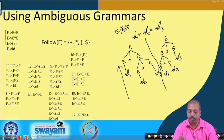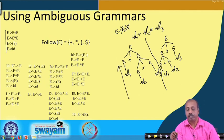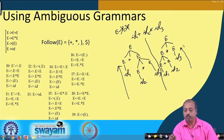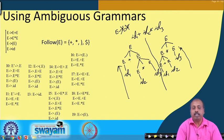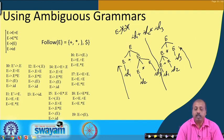In the other case, addition is done first — ID1 plus ID2 — and then multiplied by ID3. Both are syntactically correct but give two different parse trees, giving rise to ambiguity. This grammar is therefore an ambiguous grammar.